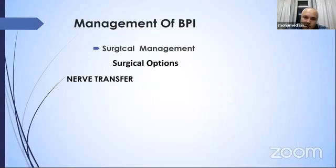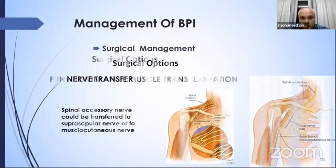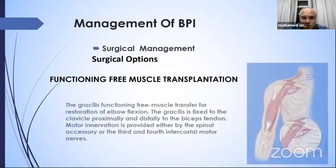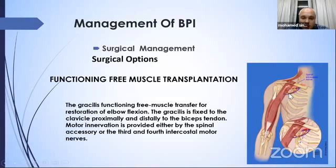Nerve transfer — the most famous is the spinal accessory nerve, used to transfer to the suprascapular nerve to regain shoulder abduction or to the musculocutaneous nerve to regain elbow flexion. Functional free muscle transplantation is another option; the most commonly used is the gracilis muscle, transferred to restore elbow flexion. It is fixed to the clavicle proximally and distally to the tendon of the biceps, with nerve supply from the spinal accessory or intercostal nerves, usually the third or fourth intercostal.